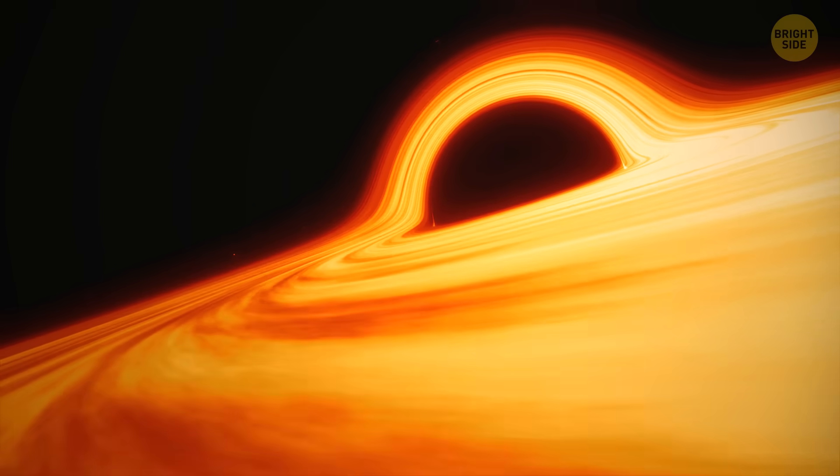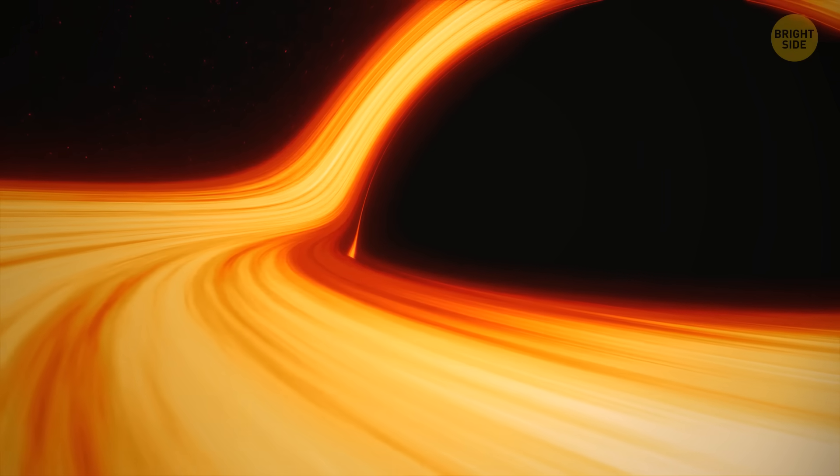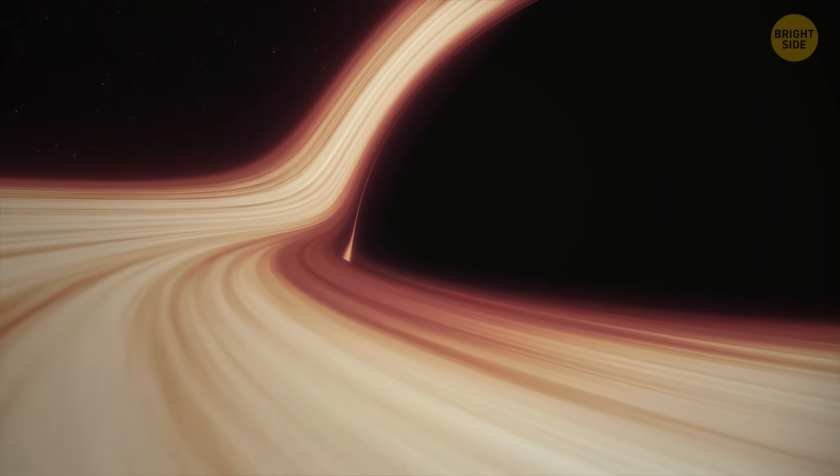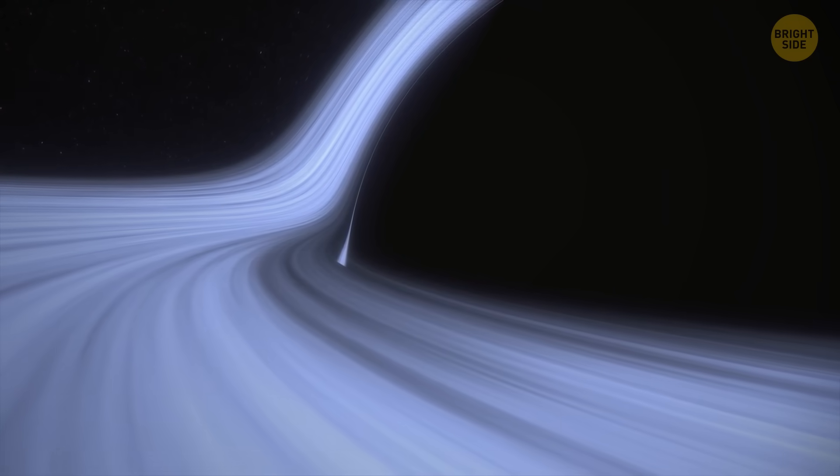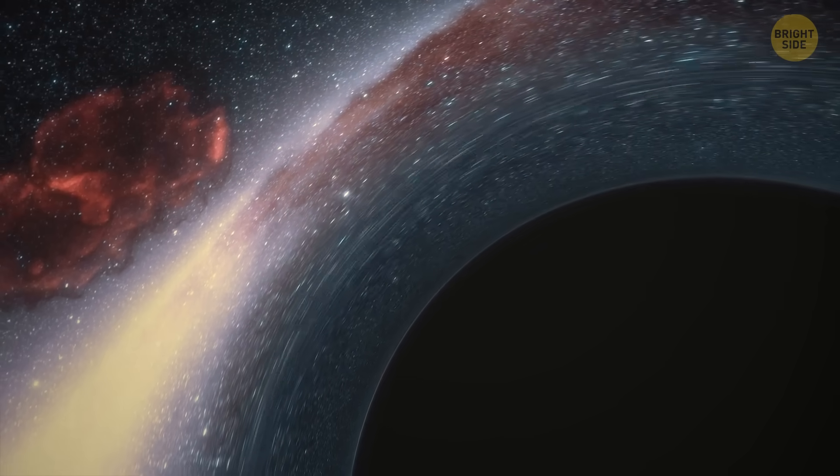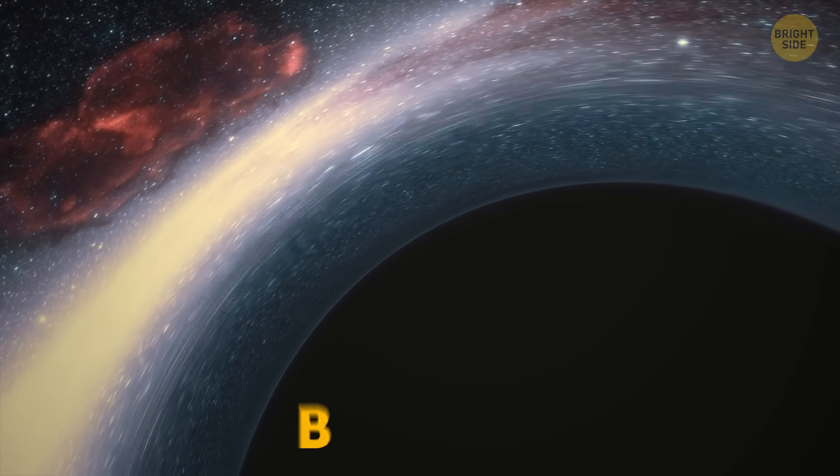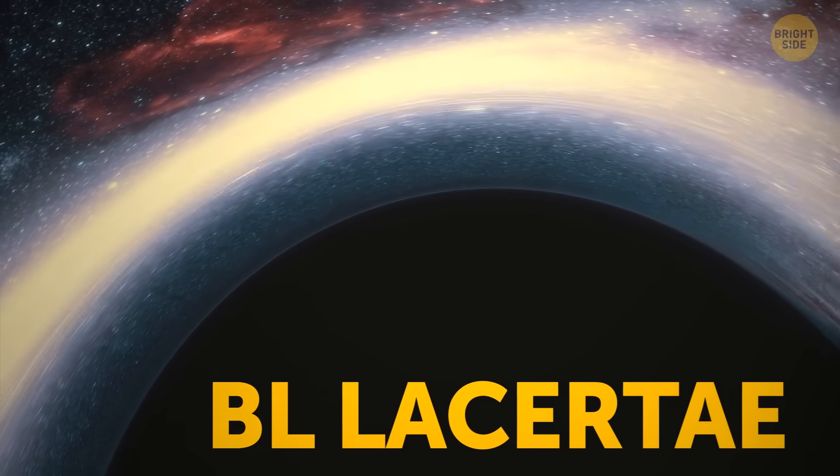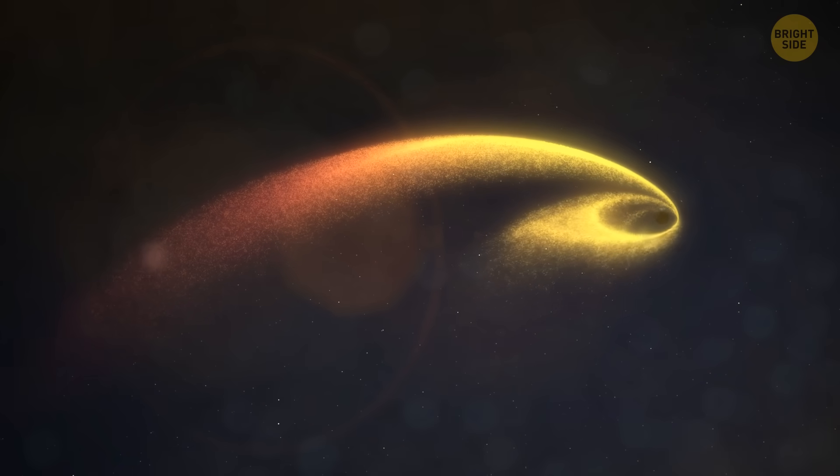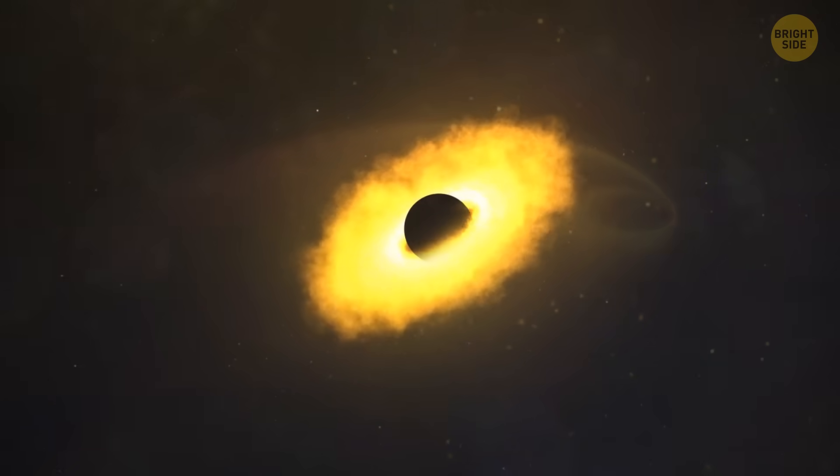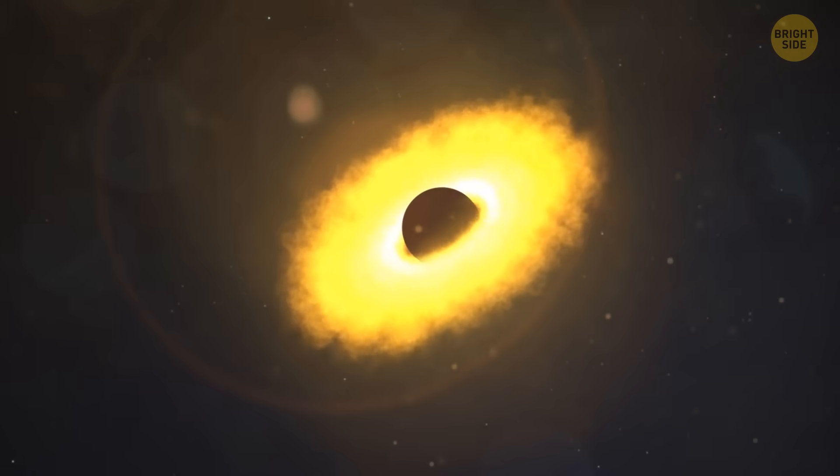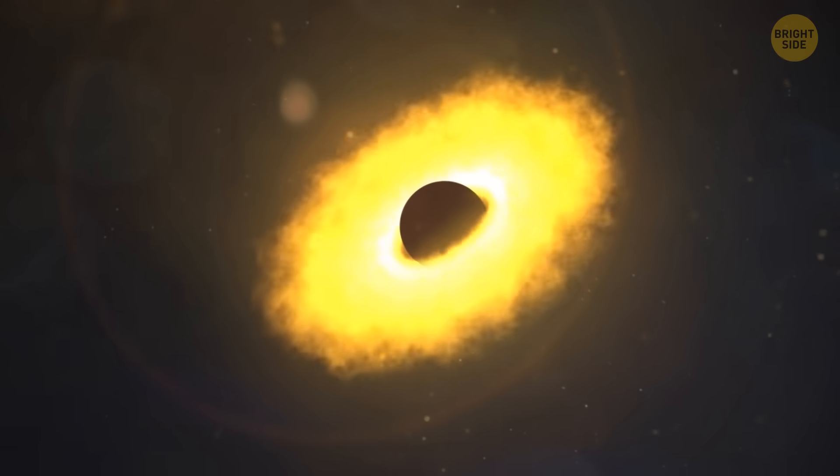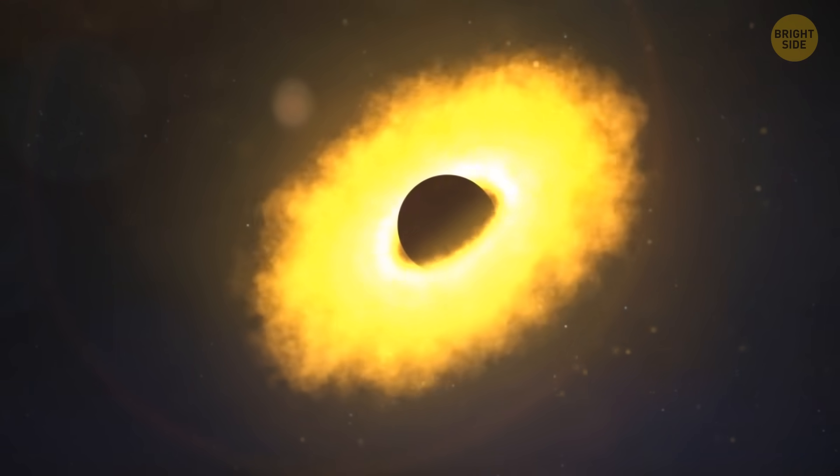Sagittarius A is actually pretty nice and calm. Yes, it still swallows giant stars, but it's definitely not a threat to us. But not all of them are like that. For example, a black hole in the galaxy B.L. Lacertae devours a huge amount of gas and dust. If we were somewhere near it, it would look 115 times larger than the sun, and we would have burned up just getting close to it.